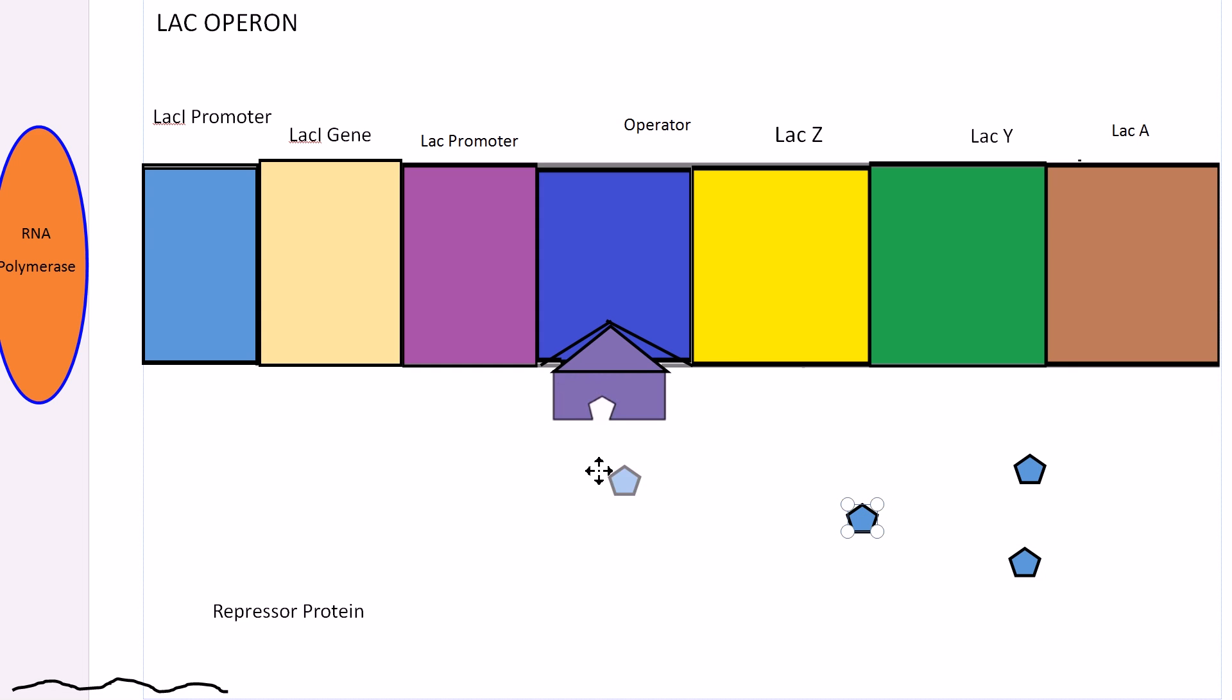the lactose will bind to the repressor, which will actually change the shape of the repressor. In the absence of lactose, the lac repressor is active, meaning it is bound to the operator in the off position. This is the active repressor protein.